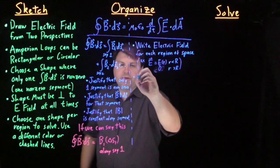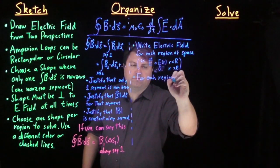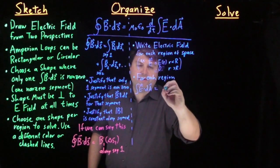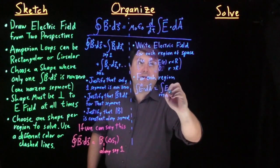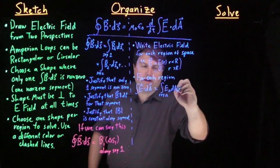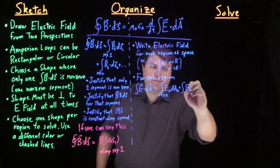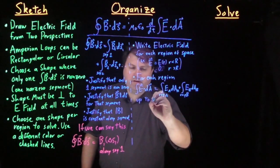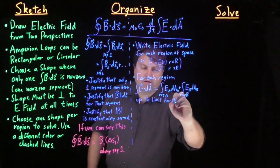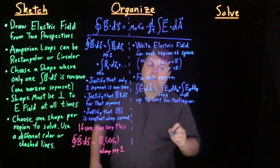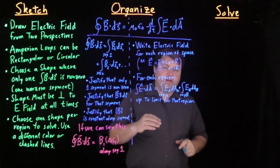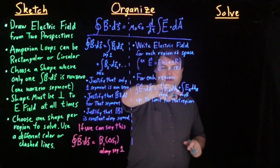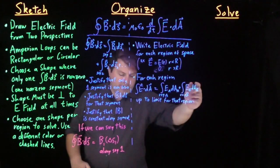Once we have this, then for each region our integral of E·dA is equal to for region A, EA·dA plus integral EB·dAB for region B up to the limit for that region. So if we are stopping in the first region, we just have the first integral of region A. If we go up to this region, then we do the limits of this region, start of region B up to the end, and so then we find our integral.